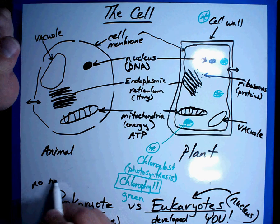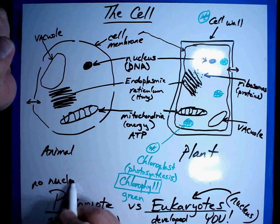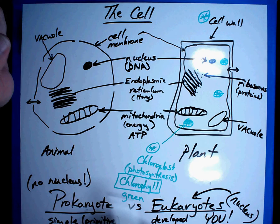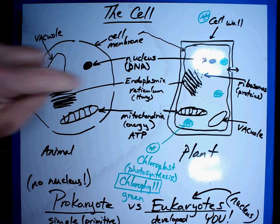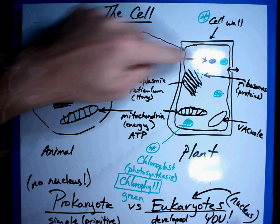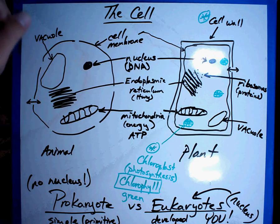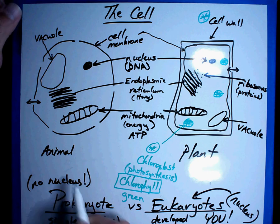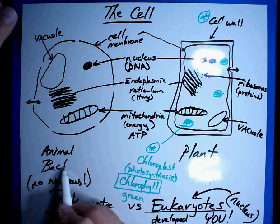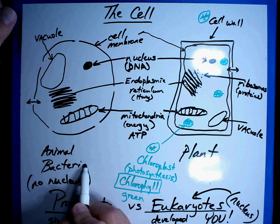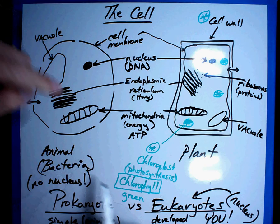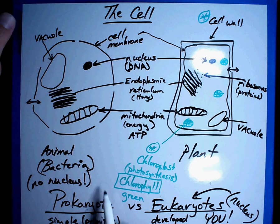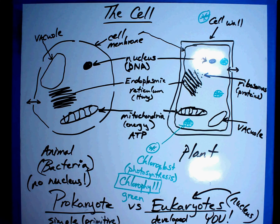Prokaryotes, no nucleus. So what has this? Well, both of these cells are eukaryotes because they have a nucleus and they're very developed. Prokaryotes are going to be bacteria. So add that in there. Bacteria, which are not like this or this, are going to be prokaryotes. So these are the parts of the cell and how they work.